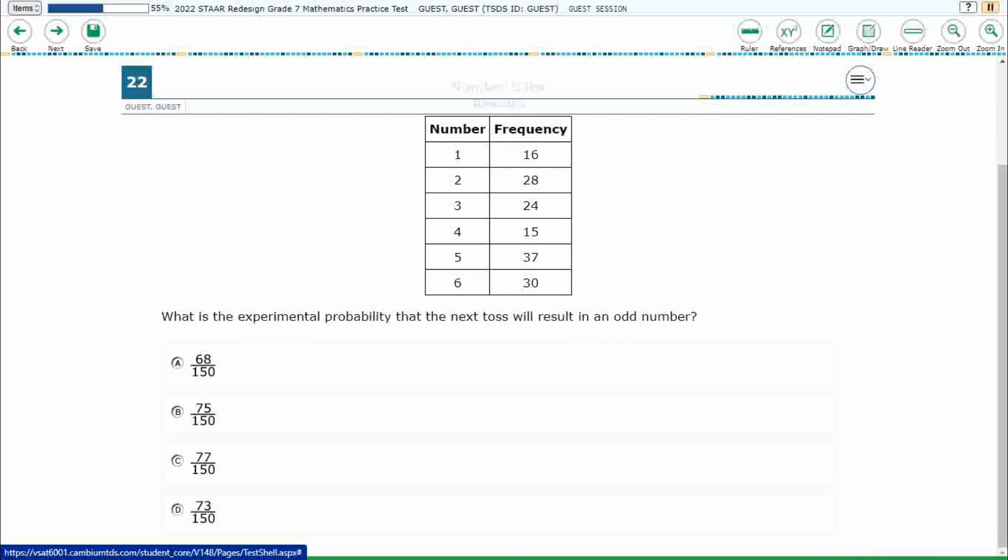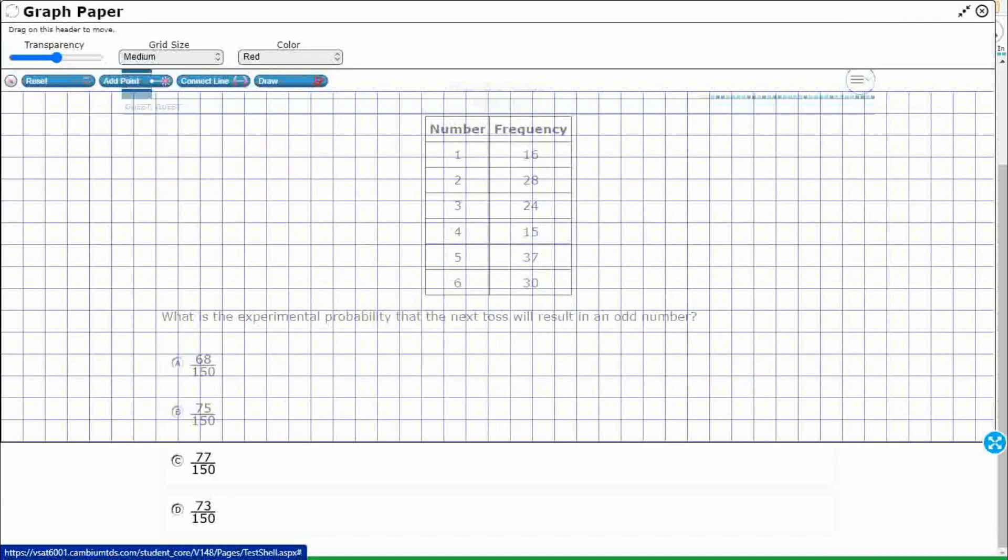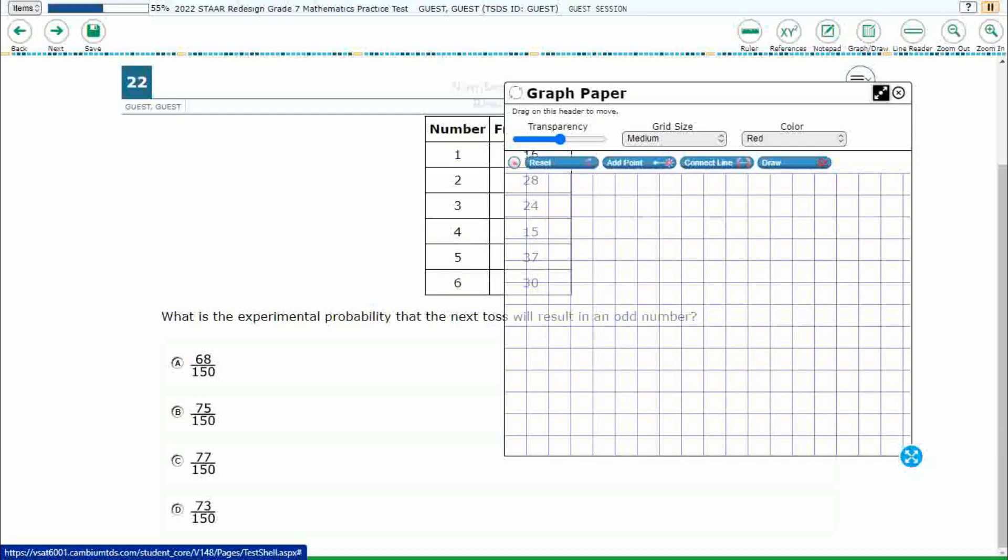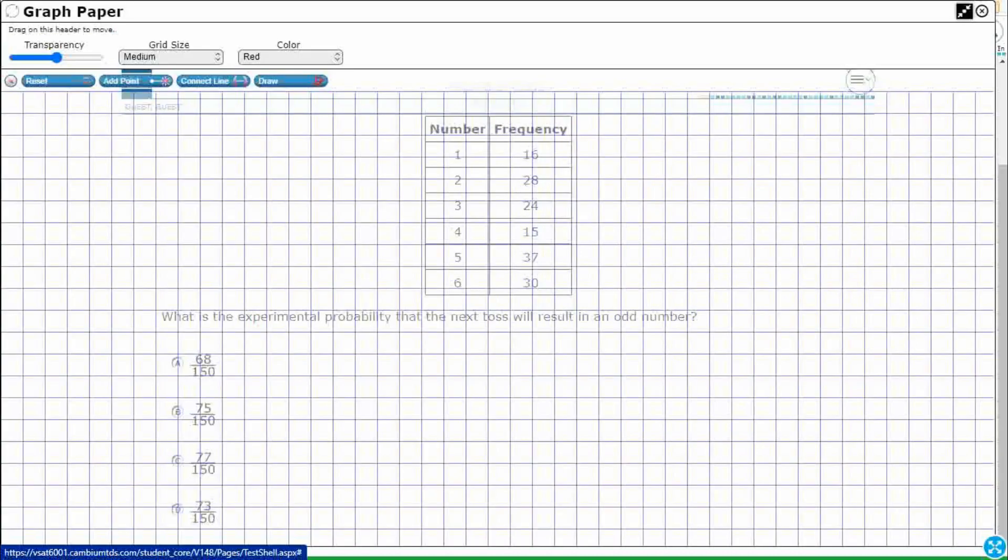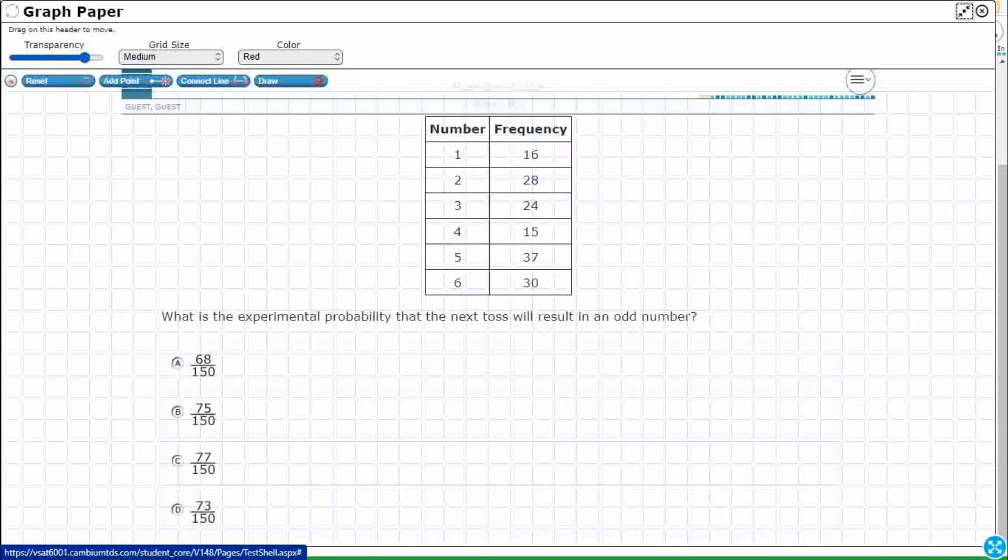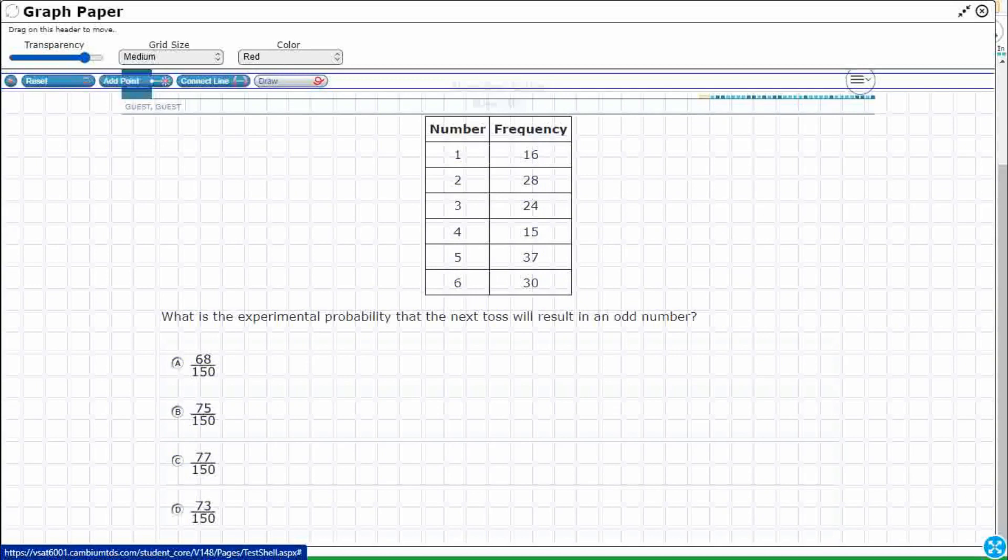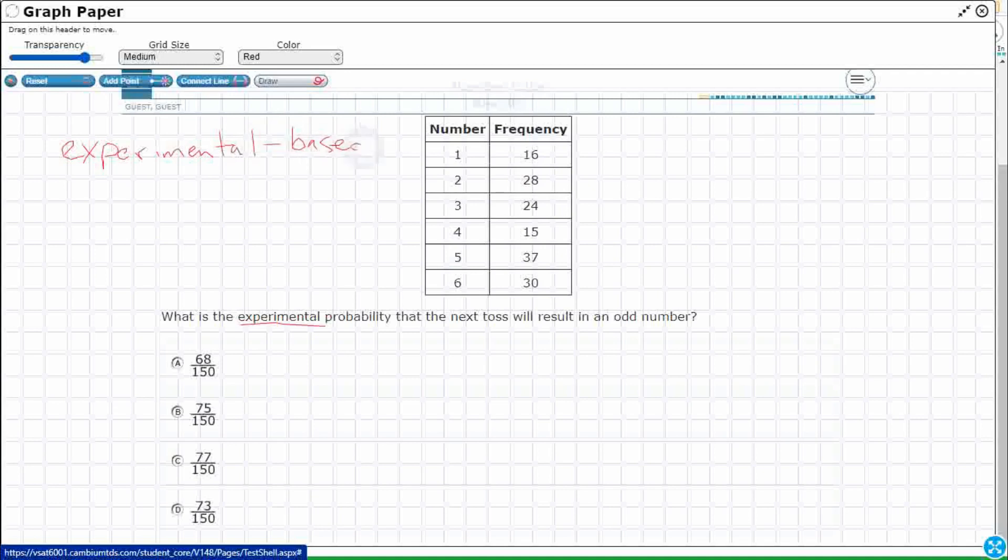So we need to find the experimental probability. And so let's take a look at that, because that is going to be kind of a key term for us. This whole problem revolves around that term right there. So there are two different types of probabilities. Experimental probabilities are based on what happened, what actually happened.